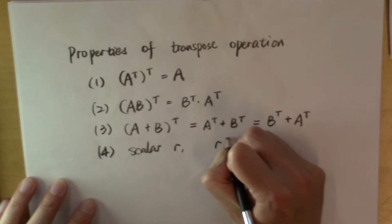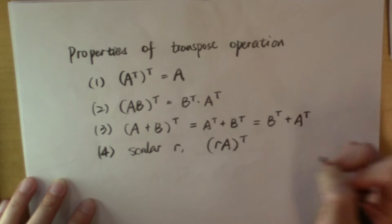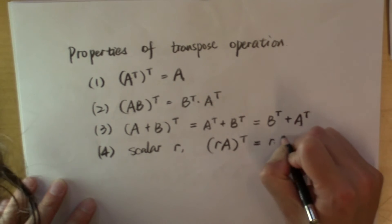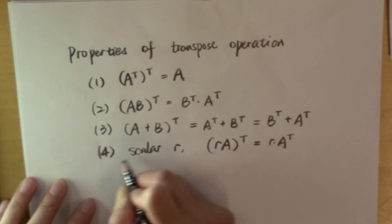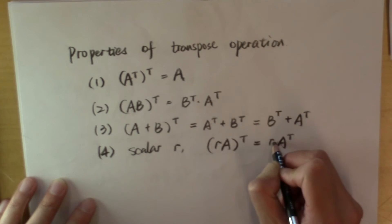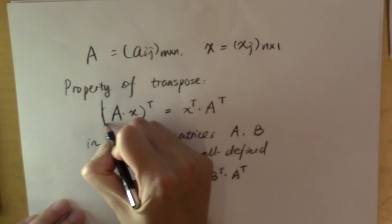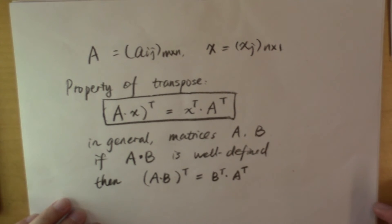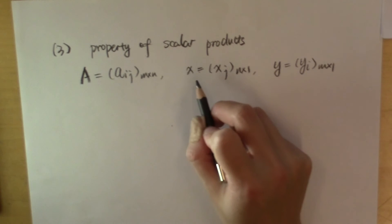So once we got this fact straight, let's look at the cool thing about scalar products we can do with transpose. In addition to matrix A and vector X,